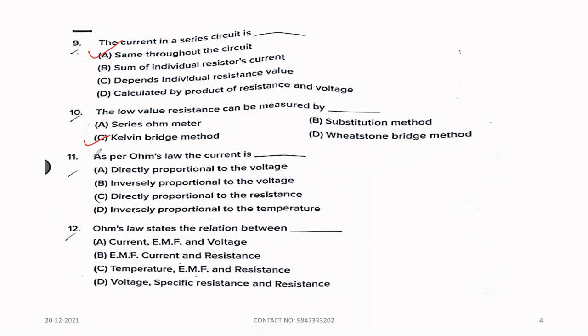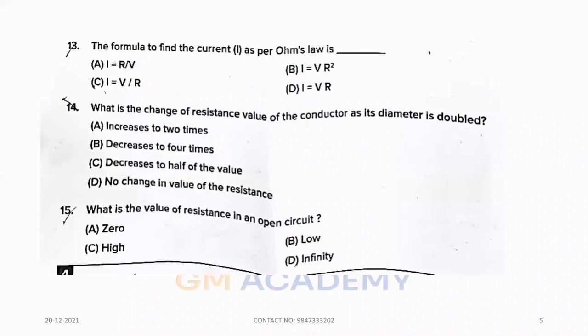Eleventh question, as per Ohm's law, the current is directly proportional to the voltage. Option A is the correct answer. Twelfth question, Ohm's law states that the relation between option B, EMF of current and resistance. Next question, the formula to find the current as per Ohm's law is option C, I equals V by R.